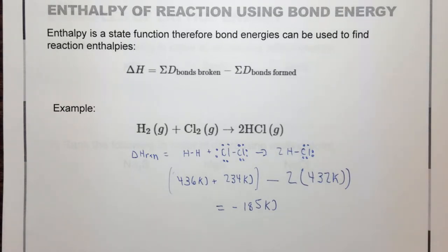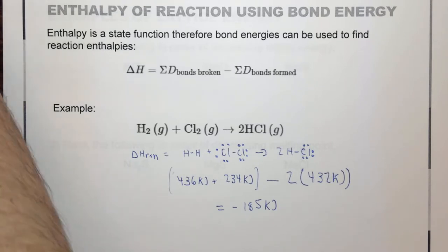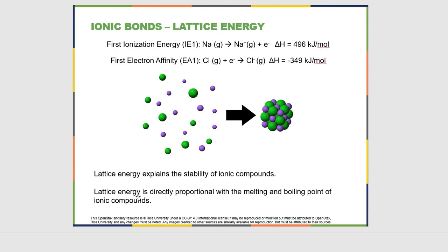This works because enthalpy is a state function, which means it's independent of the path that you take. Now that we've looked at covalent bonds, let's look at ionic bonds. There's something interesting going on with ionic bonds, and that is the lattice energy. If you think about trying to melt or boil an ionic compound, it takes a tremendous amount of energy, because you have to separate those ions, and those positive and negatively charged ions like to be next to each other.